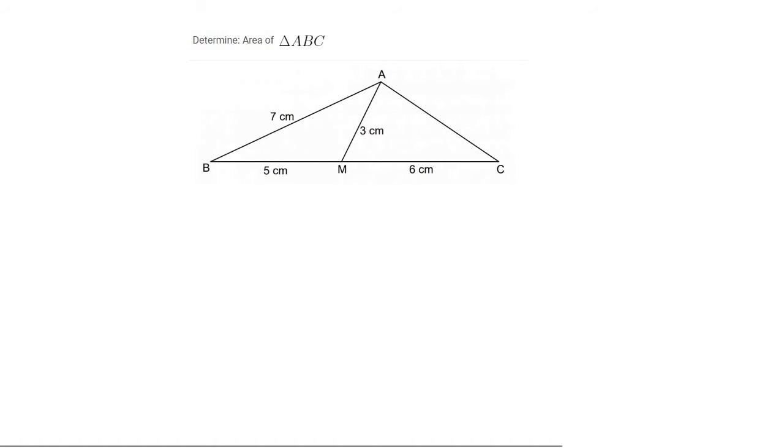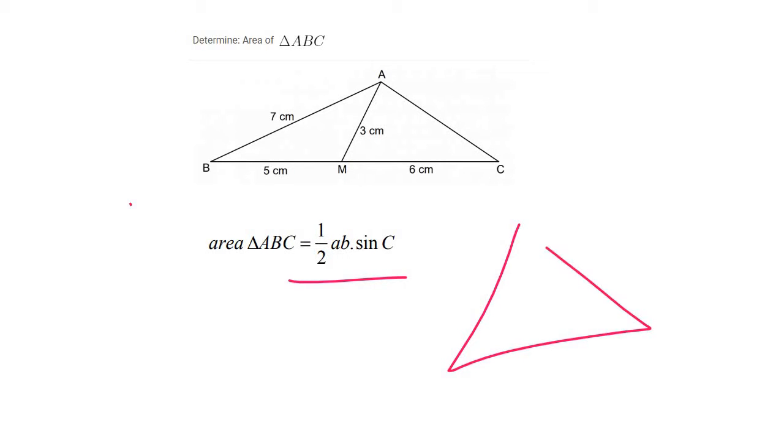The area of a triangle where we don't have the height can be solved using the area formula from trigonometry. And so that's this formula. Now the way that formula works is you need an angle and you need two sides next to the angle.